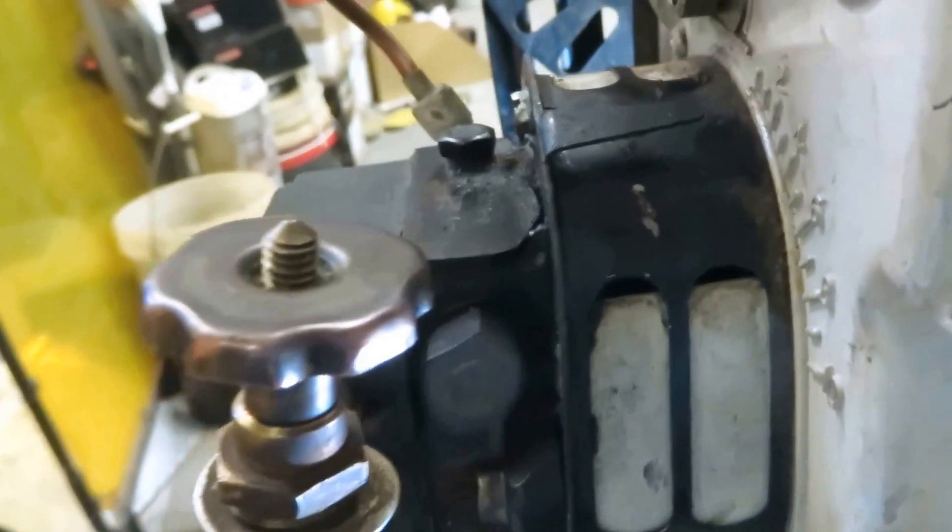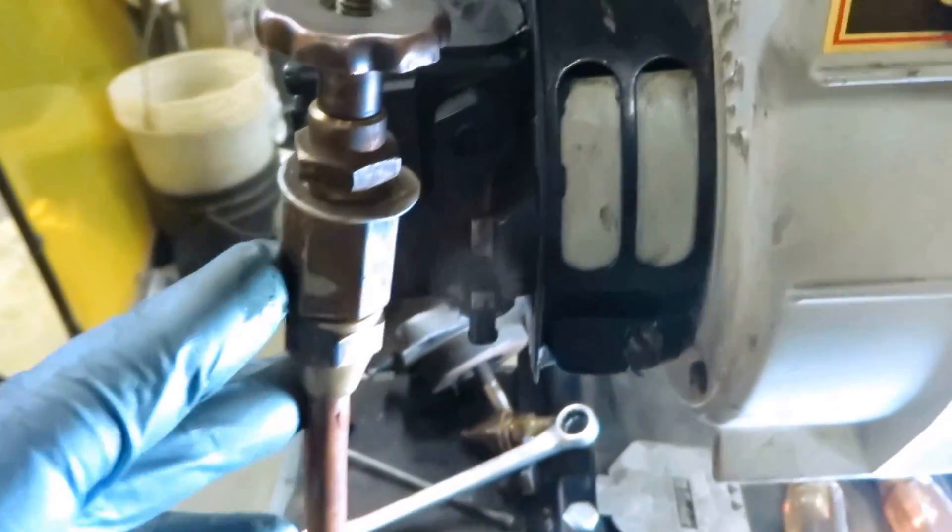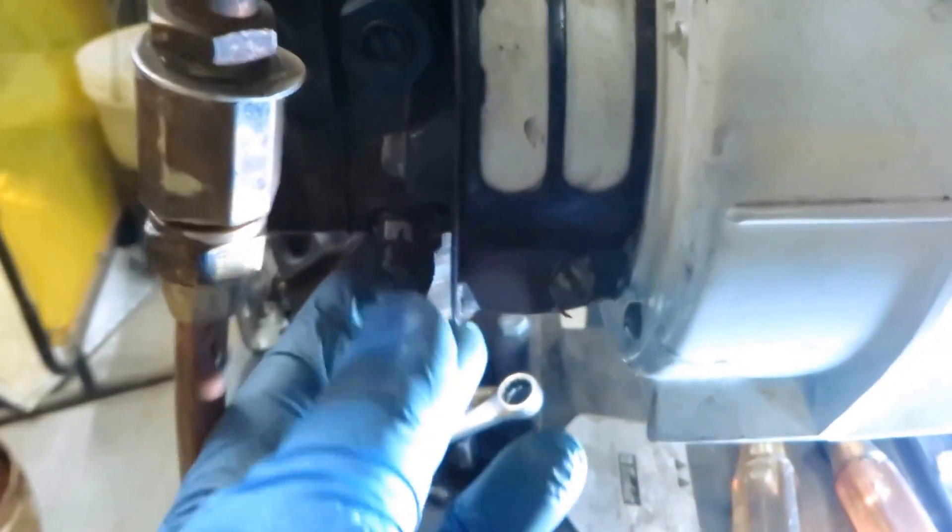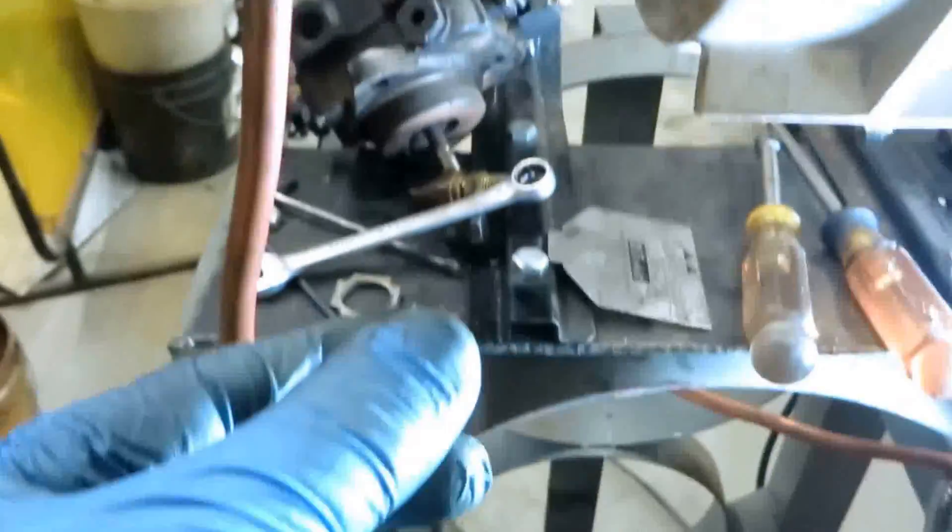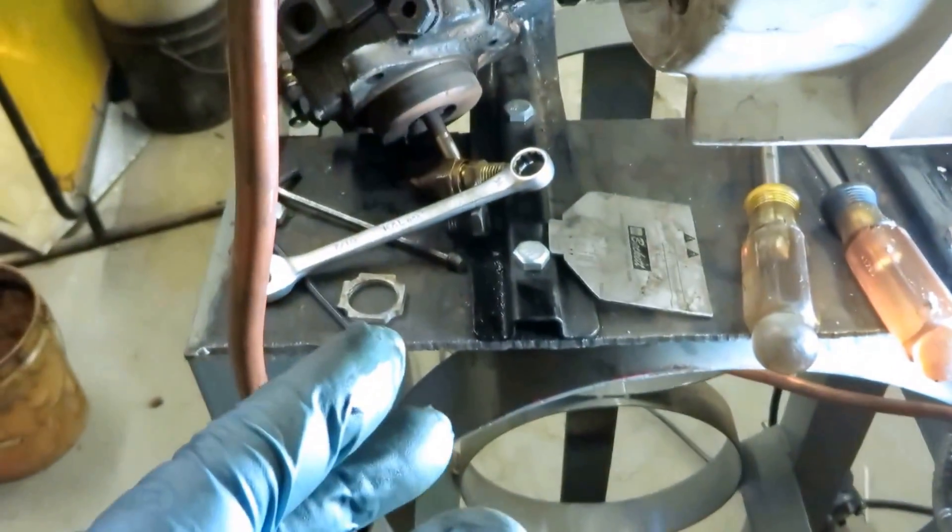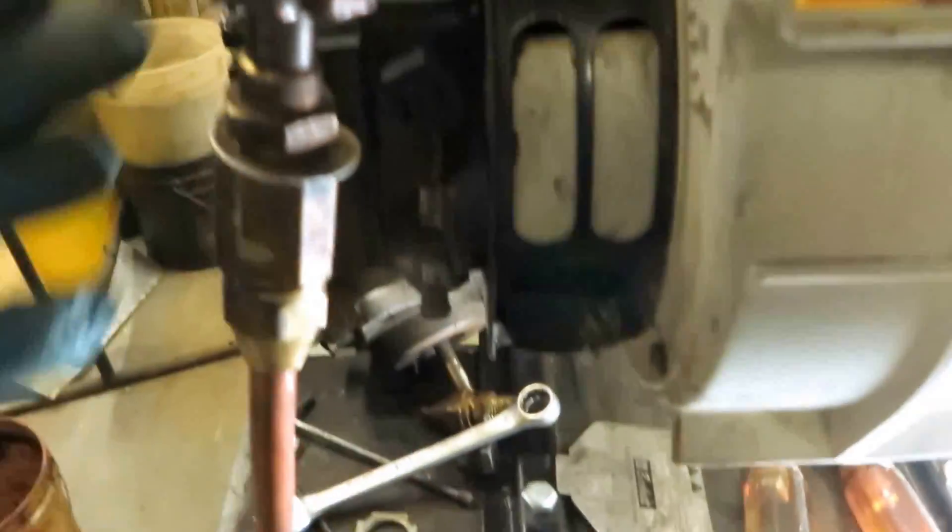So obviously you got your little bleeder here. If there was air in the line, you would want to run it, open that bleeder up, until you got a nice clean stream of red oil, and then shut it and it would fire up.